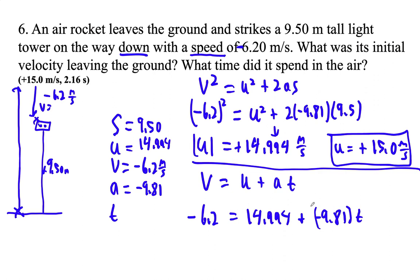And this time is 2.16048 seconds. So T is 2.16 seconds. And that's from the ground to the light tower.